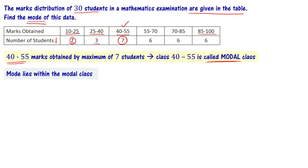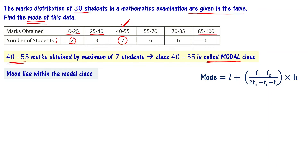The mode lies within the modal class. Mode is one specific number, but to find exactly what that number is within 40 to 55, we use a formula. The formula for mode is: Mode = L + [(f1 - f0) / (2·f1 - f0 - f2)] × h.